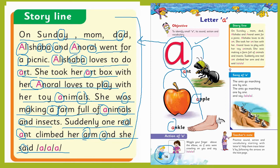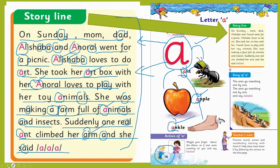यह वो sound है जो बहुत सारे अलफ़ाज़ में यूज़ होती है — इसको 'a' बोलते हैं। शुरू की आवाज़ इन letters की एक जैसी है: जैसे ant, apple, ankle, arm, animals, Anoral, Alishba, art — यह तमाम अलफ़ाज़ 'a' की आवाज़ से शुरू होते हैं। इस वीडियो को pause करके आप वापिस जाएं और यह स्टोरी दुबारा read करने के बाद 'a' की sound को practice कीजिए। यह स्टोरी आपके page number 16 में top right पे मौजूद है।